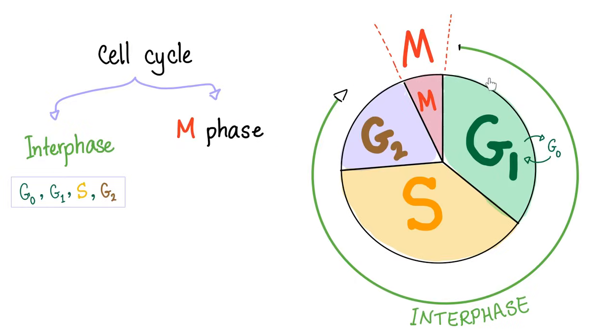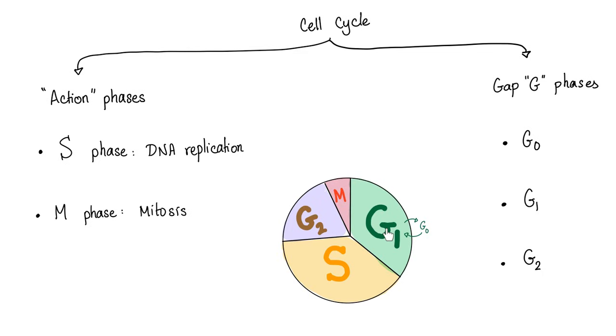As you know, the cell cycle consists of the interphase and the M phase. Mitosis or meiosis take place in the M phase. G1 is for growth, S is for synthesis, which means DNA replication. G2 is another growth, and then you go to mitosis or meiosis.